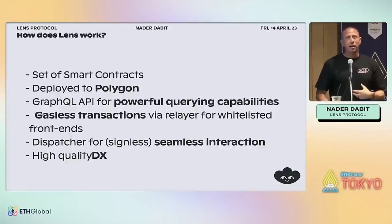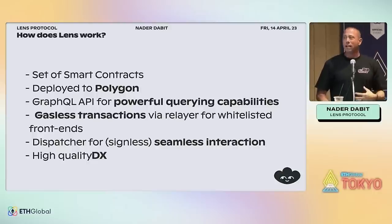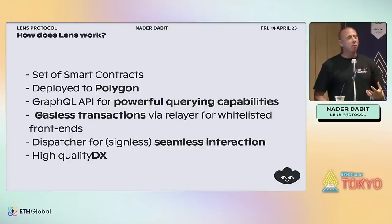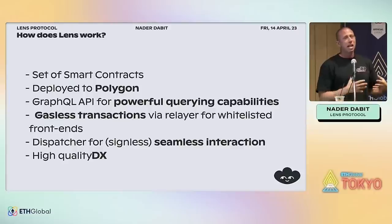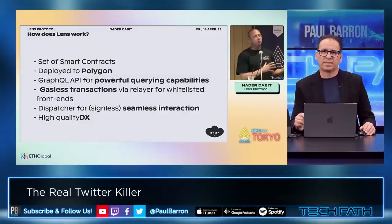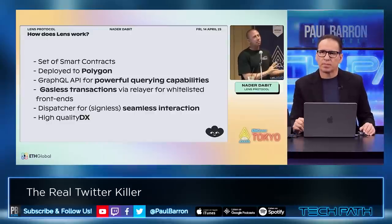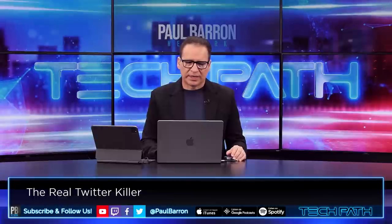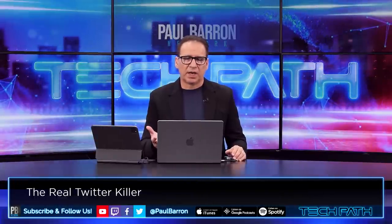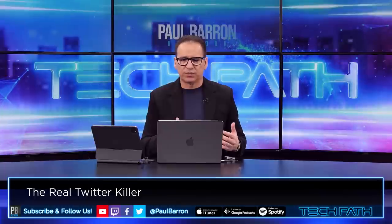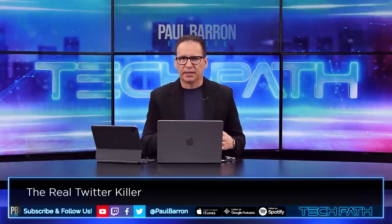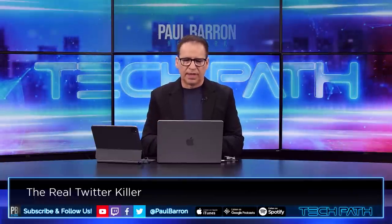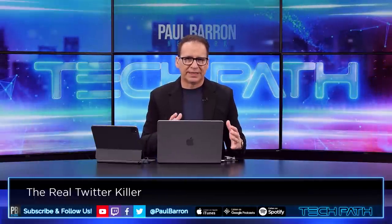At the very core of Lens is a set of smart contracts deployed to Polygon. The real power of what Lens has been able to do comes from the infrastructure and design decisions around the API. If you can abstract away the gas and the signing of transactions, you have a user experience on par with something like Twitter. Then if you start adding features enabled only by decentralized technologies like blockchains, you can offer a better user experience and value proposition than traditional infrastructure.